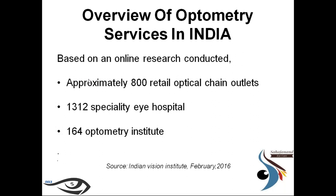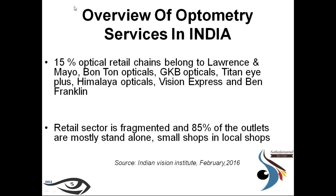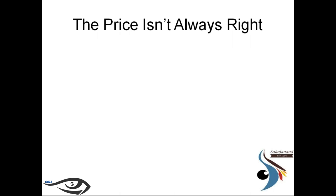An overview of optometry services in India: based on online research conducted by IBI in 2016, there are 800 retail optical chain outlets, 1,312 specialty eye hospitals, and 164 optometry institutes in India. Fragmenting the optical segment, 15% of retail chains belong to big box stores like GKB Opticals, Titan i-Plus, Bon Ton, and Vision Express. The other 85% of outlets are mostly standalone small shops — that is, private optometry or optical practices in local areas.